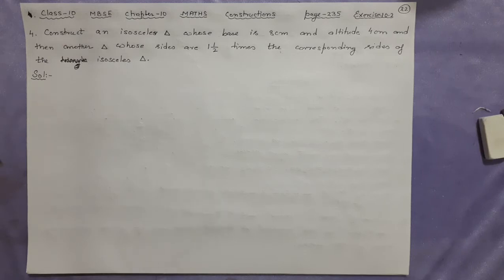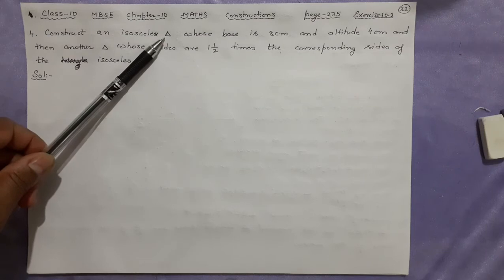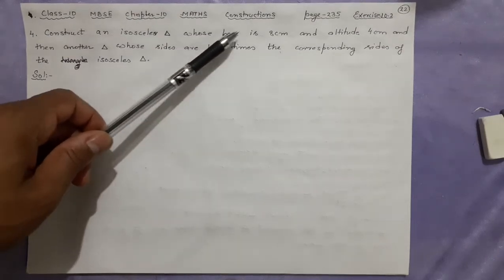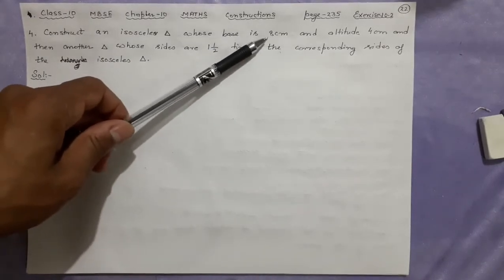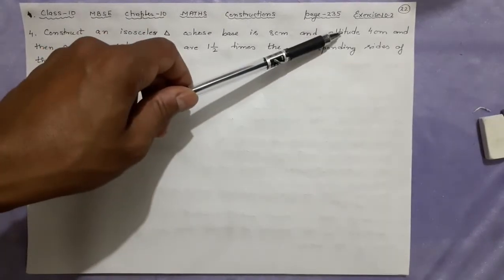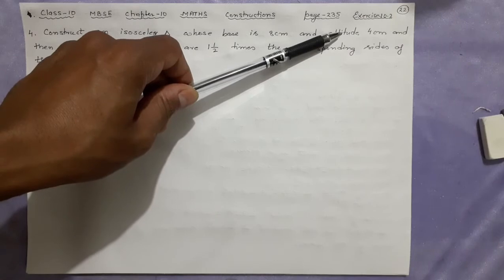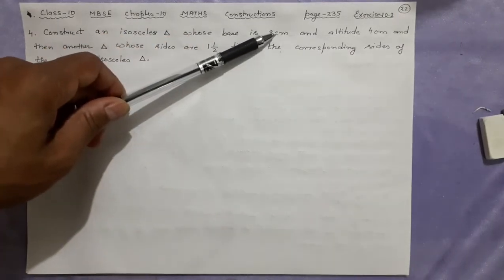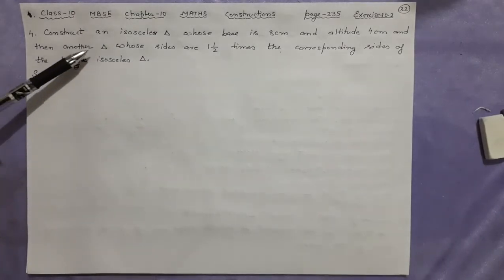This question is quite similar to number three, but the making of the initial triangle is slightly different. Here we have to construct an isosceles triangle, that means two sides are already equal, whose base is 8 centimeters and altitude is 4 centimeters. Remember that in an isosceles triangle, whenever there is altitude that is 90 degrees, it will pass through the midpoint of this side.